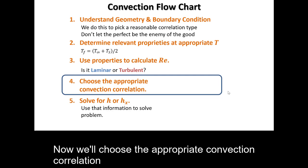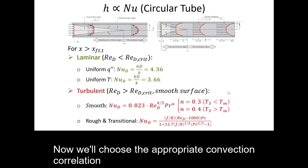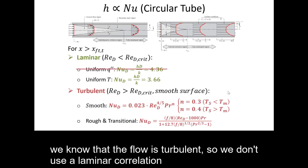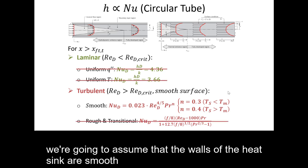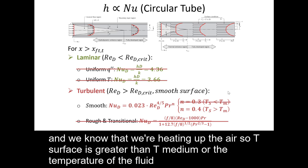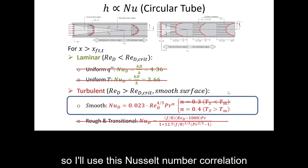Now, we'll choose the appropriate convection correlation. We know that the flow is turbulent, so we don't use a laminar correlation. We're going to assume that the walls of the heat sink are smooth, and we know that we're heating up the air, so T surface is greater than T medium, or the temperature of the fluid. So, I'll use this Nusselt number correlation with n equal to 0.4.